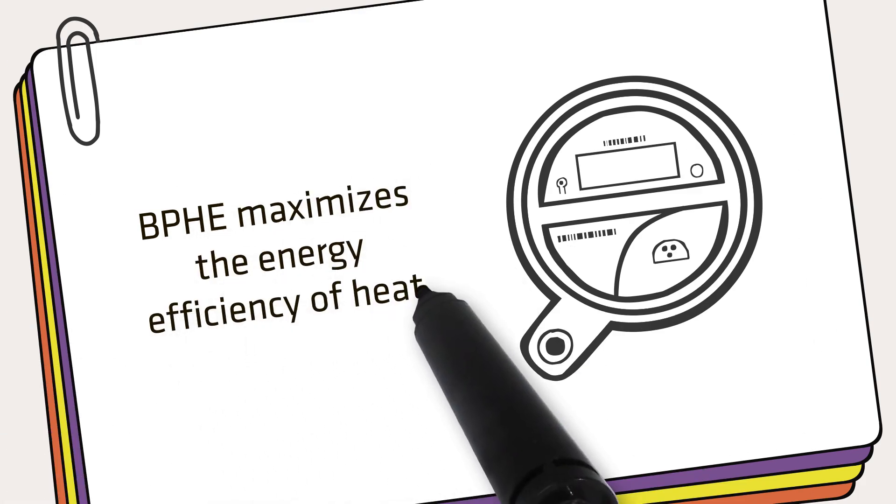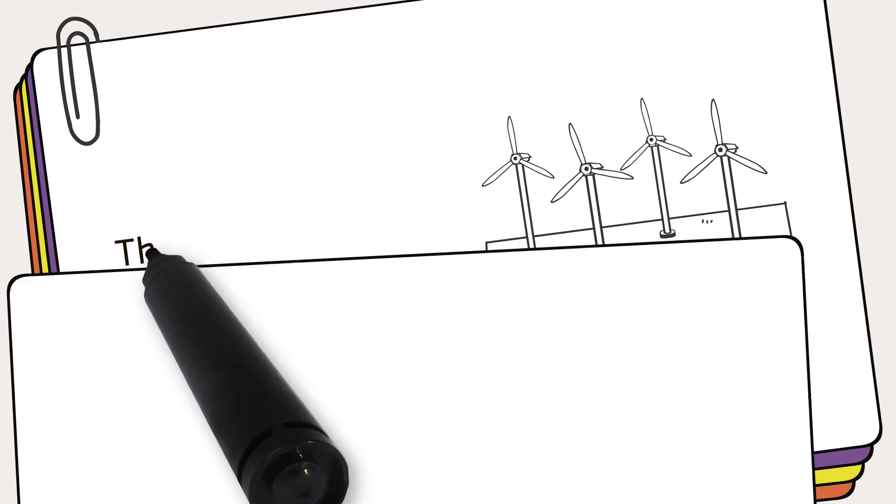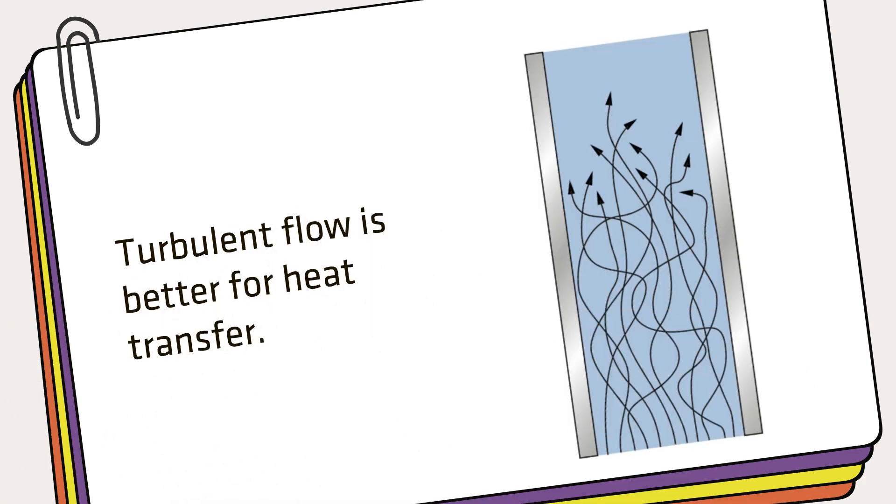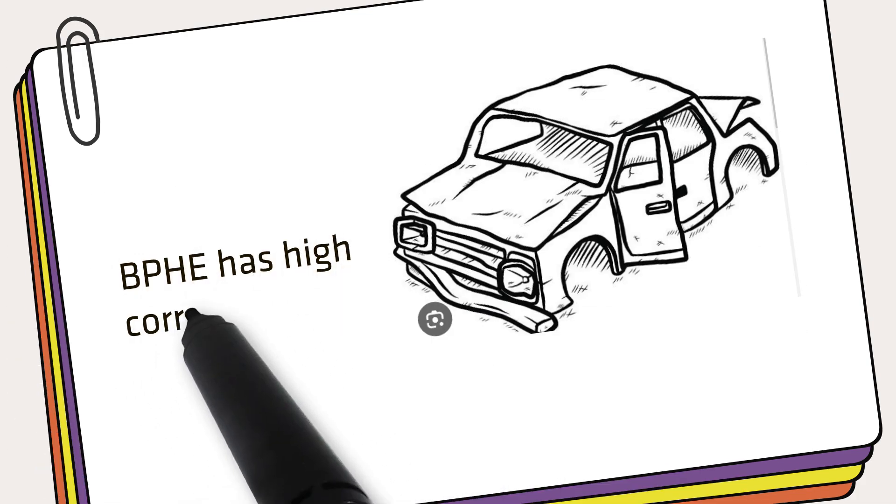BPHE maximizes the energy efficiency of heat pumps and chillers. The principle used in a BPHE is natural forces. Turbulent flow is better for heat transfer. BPHE has high corrosion stability.